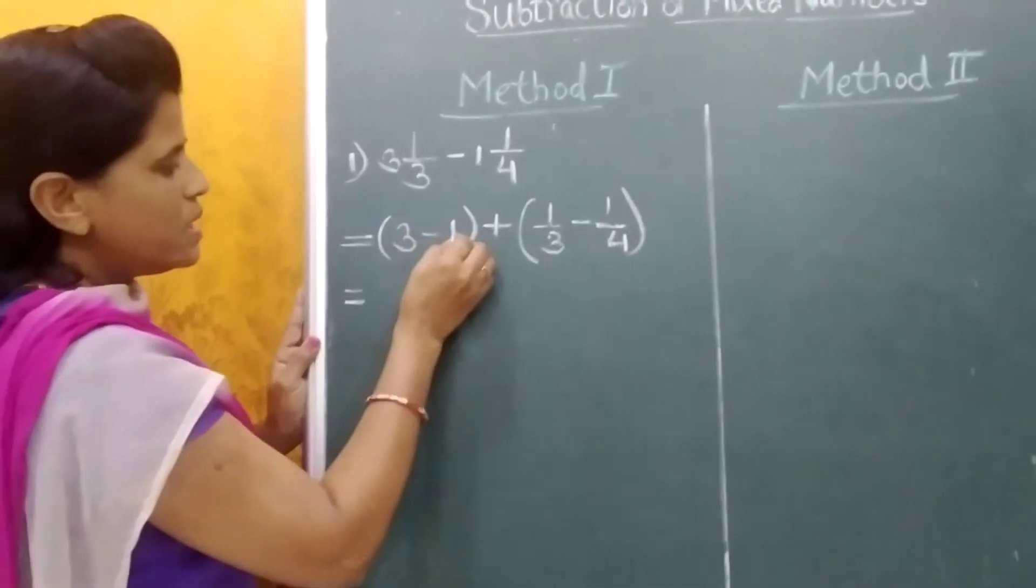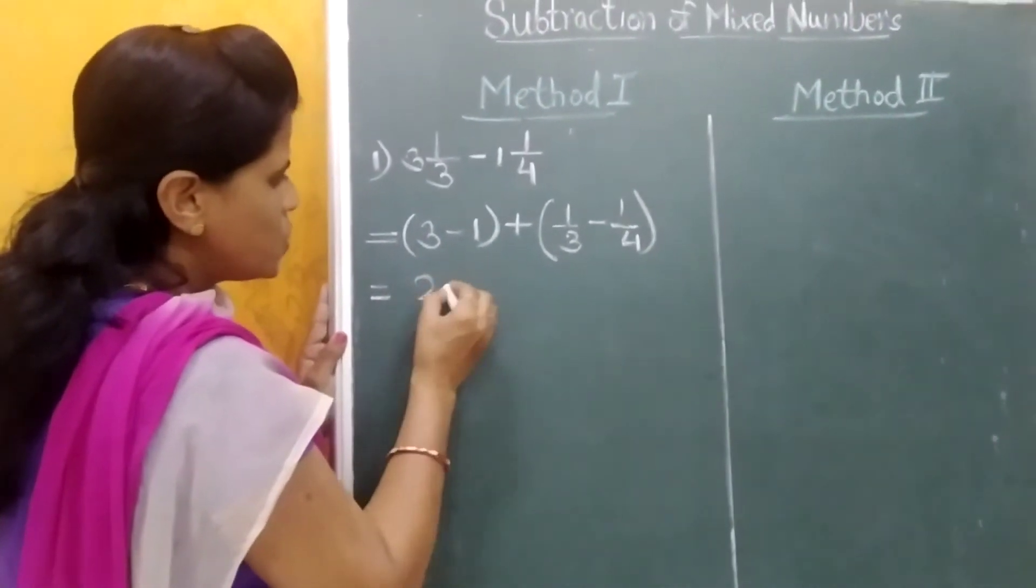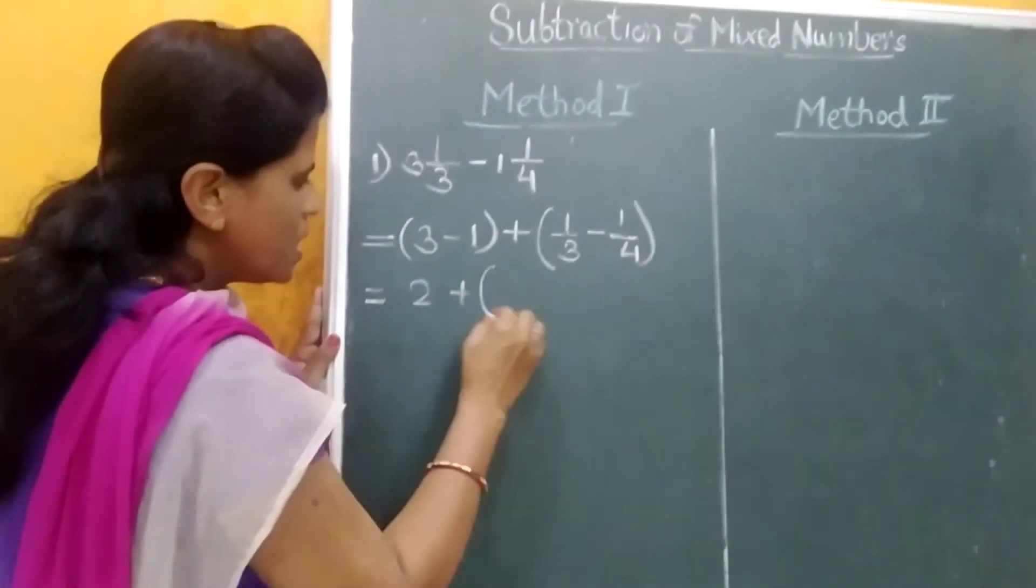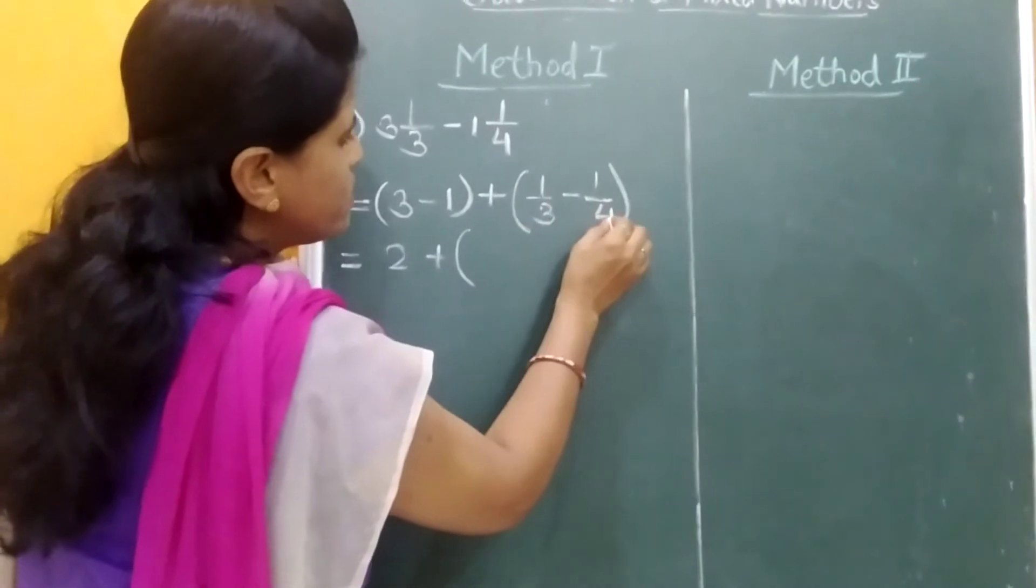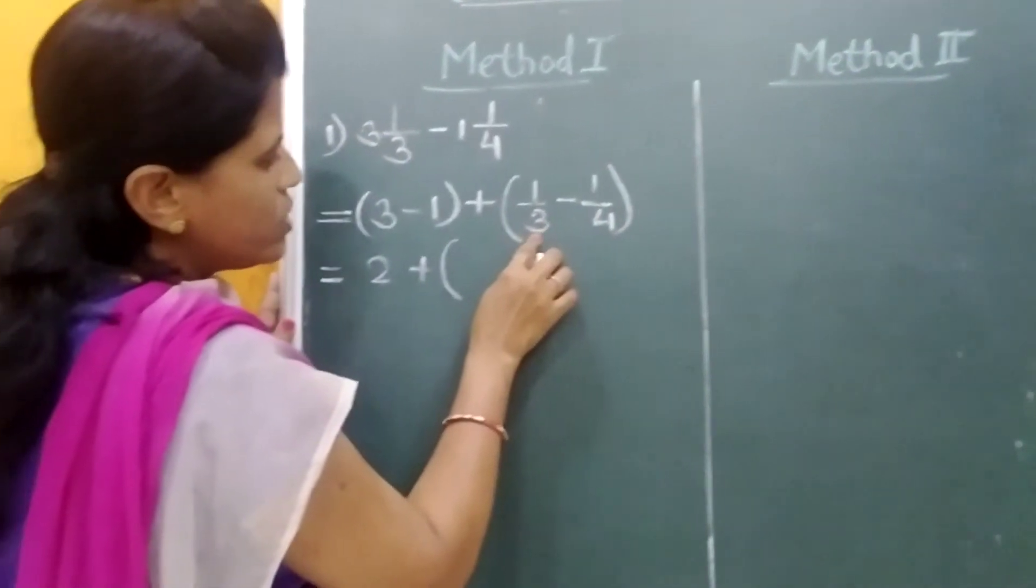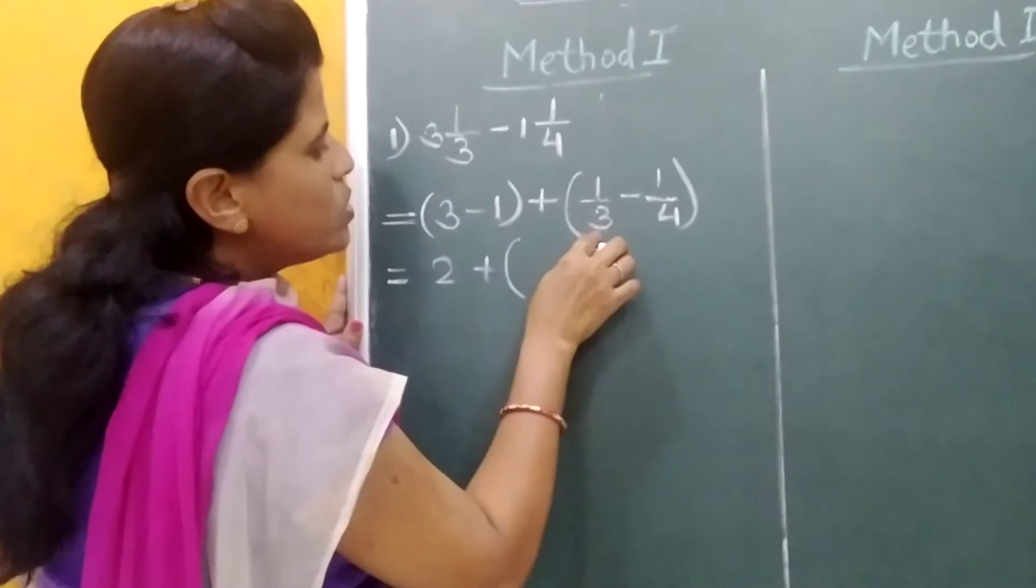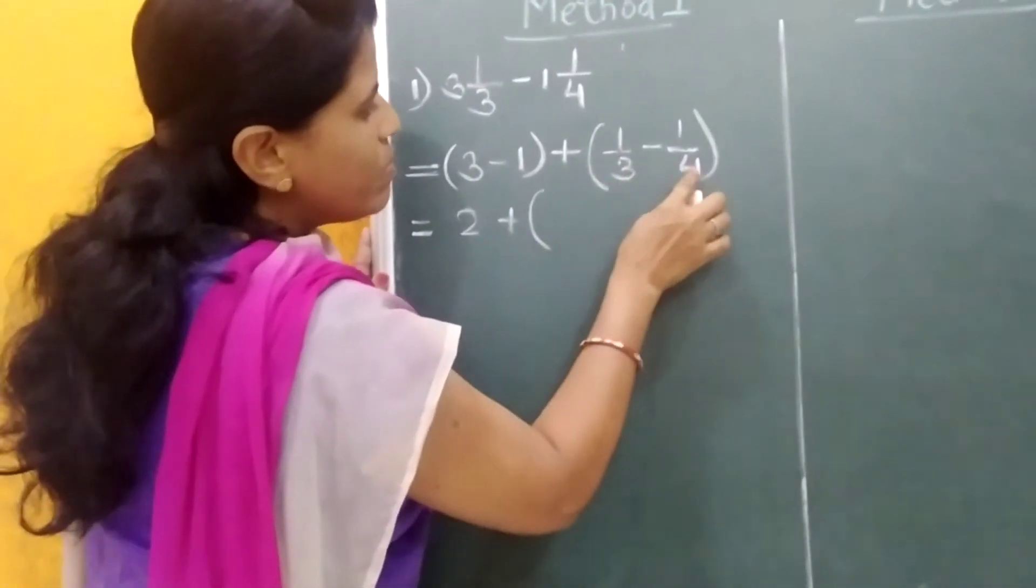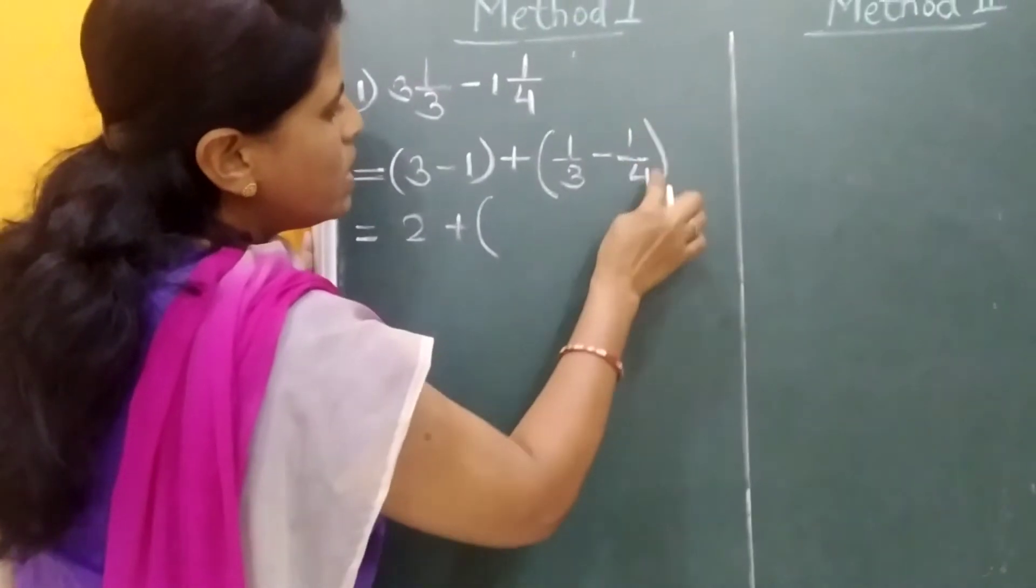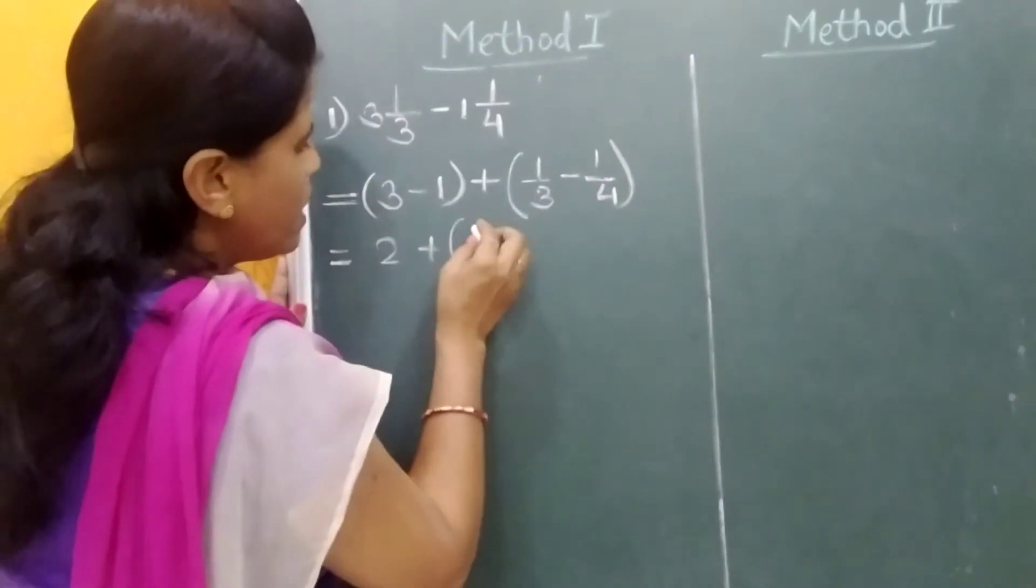Now see here, 3 minus 1 is 2 plus here the denominator is different. So we have to convert this denominator into same. For this 1 upon 3, we will multiply this by 4 and 1 upon 4 by 3. Let's see how.